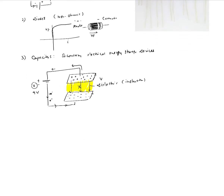How much charge is deposited on these plates? That can be determined from the relationship Q, which is the charge deposited on the plates, equals some constant C times the voltage applied across it. C is called the capacitance of this capacitor. So the charge deposited is proportional to the voltage applied, and the capacitance — determined by the way you construct the capacitor — gives you the total charge deposited on the plates.